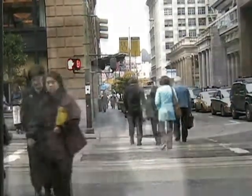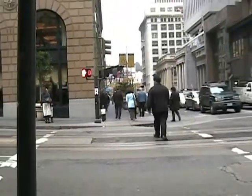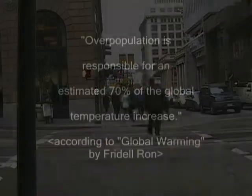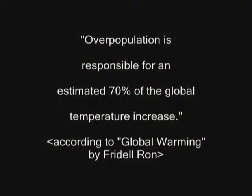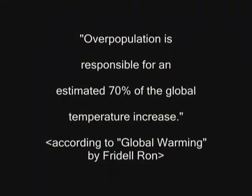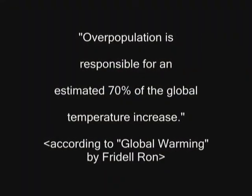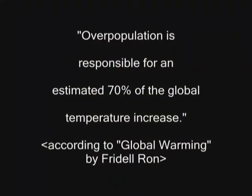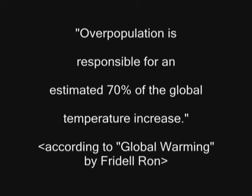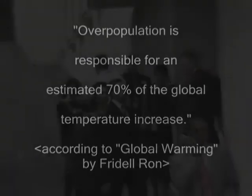Today's population affects our environment by paving roads and limiting plant growth by constructing buildings. Overpopulation is responsible for an estimated 70% of the global temperature increase.